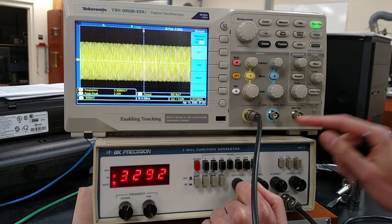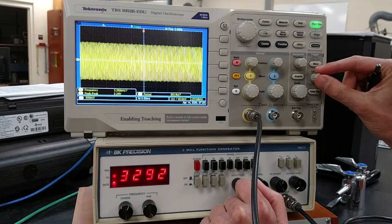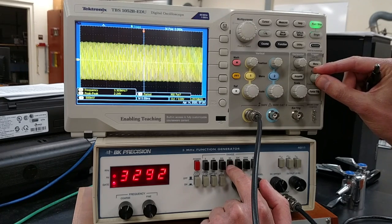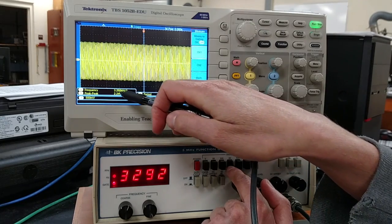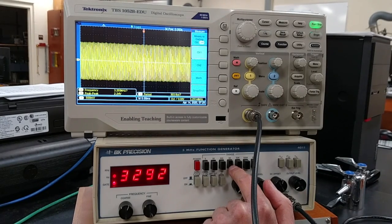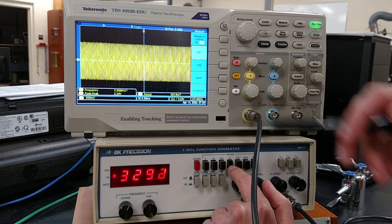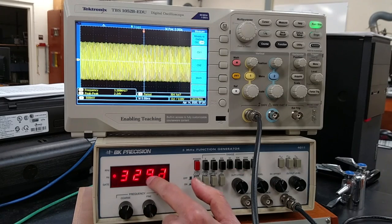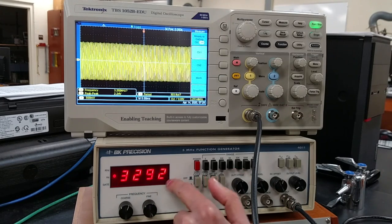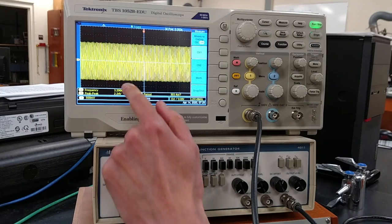It's having a bit of trouble finding the right value, but yes, we have 3.29 kilohertz according to the function generator and 3.29 kilohertz measured by the scope.